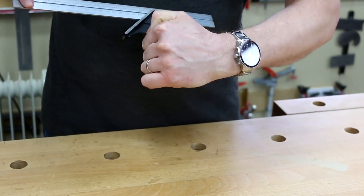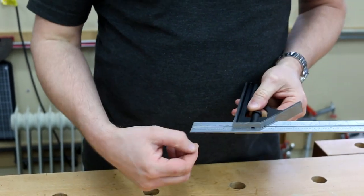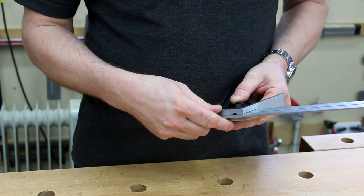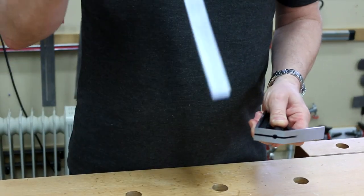We've got metric on one side, imperial on the other. This imperial measurement is down to sixty-fourths. If we want to, we can take this out, flip it around or flip it over.